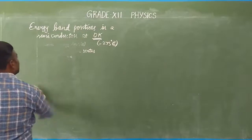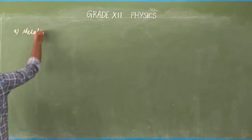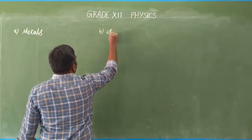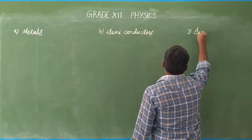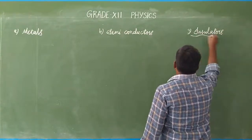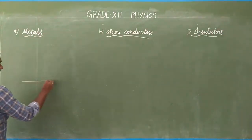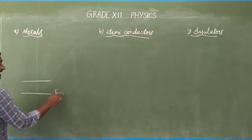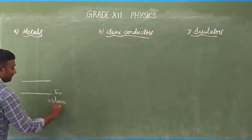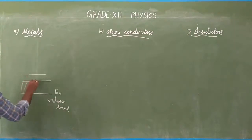We have three materials: metals, semiconductors, and insulators. In metals, there is a valence band and a small space from the valence band to the conduction band. The space between the valence band and conduction band is called the energy gap or the forbidden energy levels.